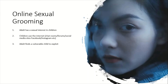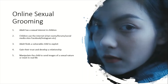Once the adult has found a vulnerable child, they need to gain their trust and develop a relationship. They could pretend to be another child, build up a fake identity, and tailor it so they appear to share similar interests — really luring the child in, making them feel loved and secure. The adult can then manipulate the child to send images of a sexual nature or meet in real life, using gifts and attention that the child doesn't receive at home.